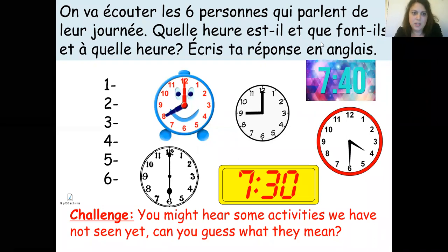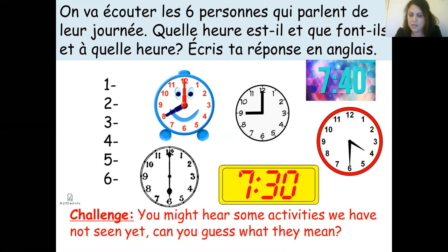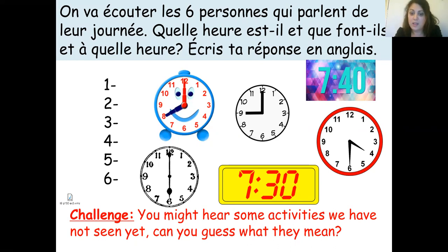The next activity is a listening activity. There is an audio file posted separately from this video. Six people are going to talk about their daily routine. You need to write down for each person the time they are talking about and what activity they are talking about. You can write this in English. To help you out, I've given you the options for the times. There are some activities you might not have seen yet, so it will be a challenge to figure out what they mean. Please pause this video, get the audio file attached to the assignment, and complete this in your book.